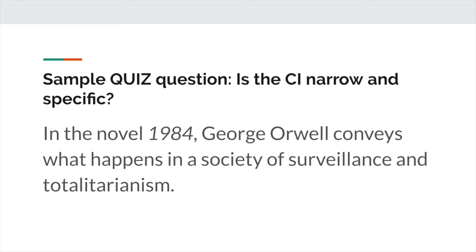Next example. In the novel 1984, George Orwell conveys what happens in a society of surveillance and totalitarianism. Is this narrow and specific? No. Again, you're asking the exact same question as in that first example: what does happen in a society of surveillance and totalitarianism? Notice how vague this CI is. Wonderful things might happen in a society of totalitarianism, or horrible things might happen. But the important thing is that from this CI you don't know, and you don't want to keep your reader in anticipation of what you're ultimately going to argue. It will make it unclear, both for yourself and the reader, what the essay is ultimately trying to prove — which is bad writing.